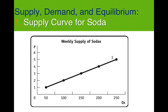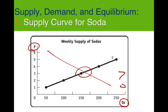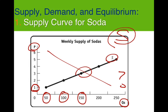Here's what the market supply schedule looks like — weekly sodas based on price. Looking at the properly labeled graph, we have price on the vertical axis and quantity supplied on the horizontal. At $1, suppliers are not willing to supply that much — maybe 50. At $2 it's 100, and at $3 it's 150. That's simply the market supply curve for soda.